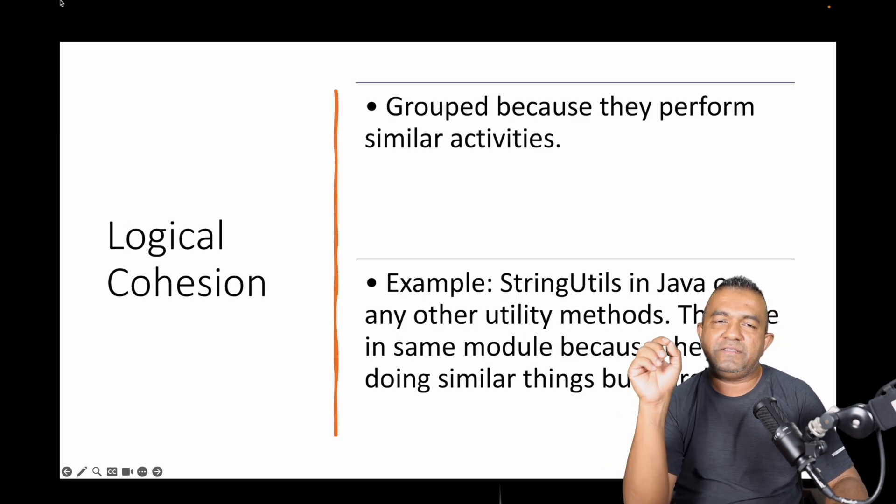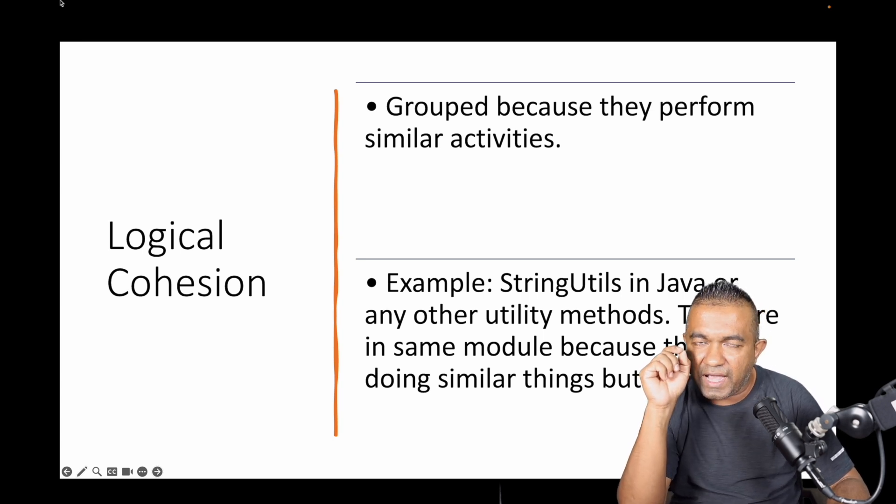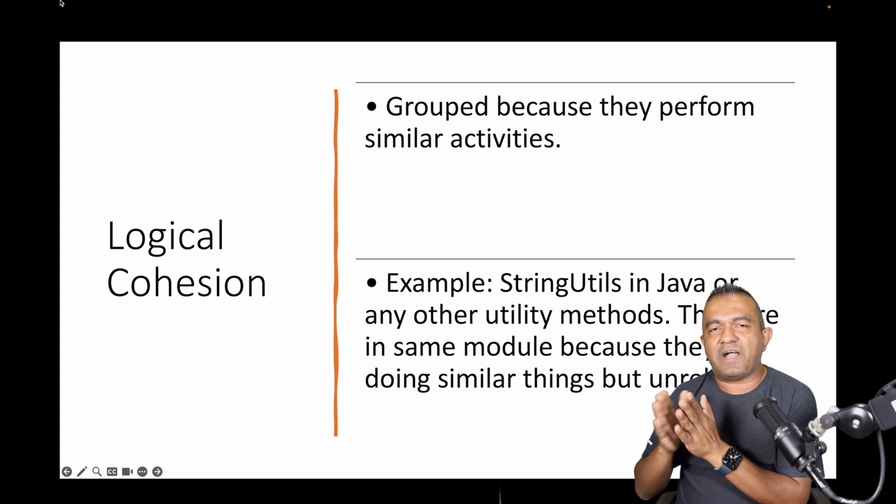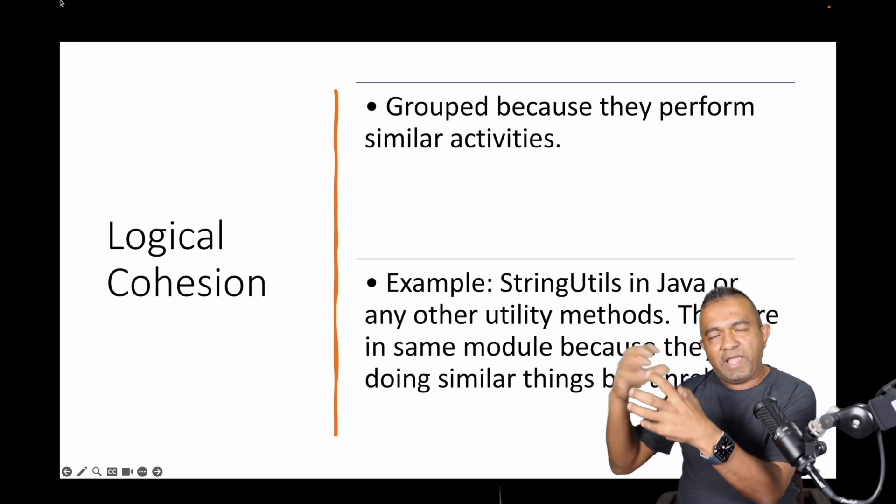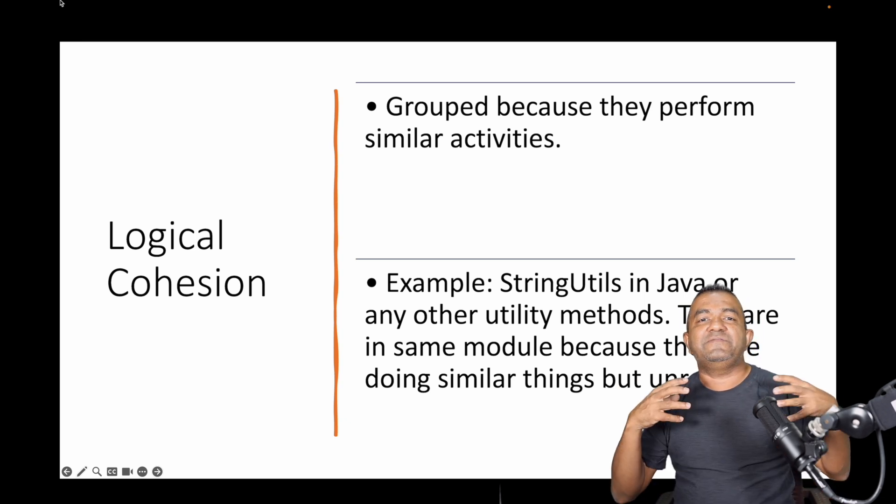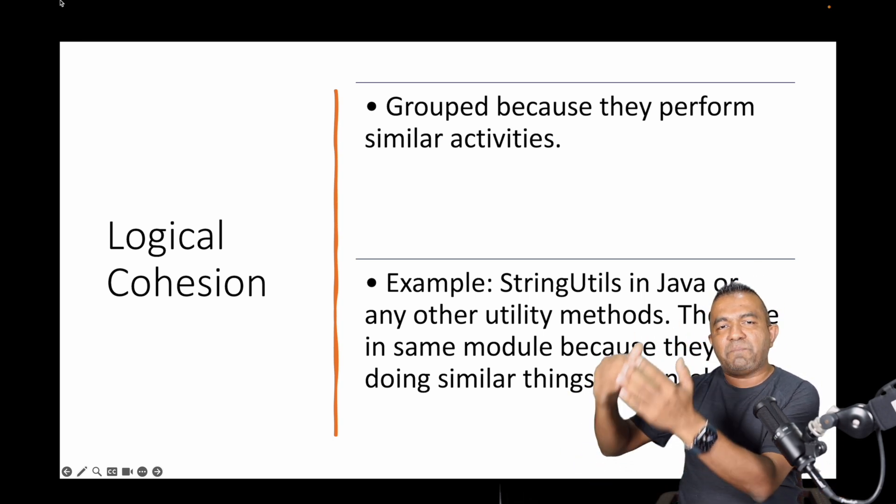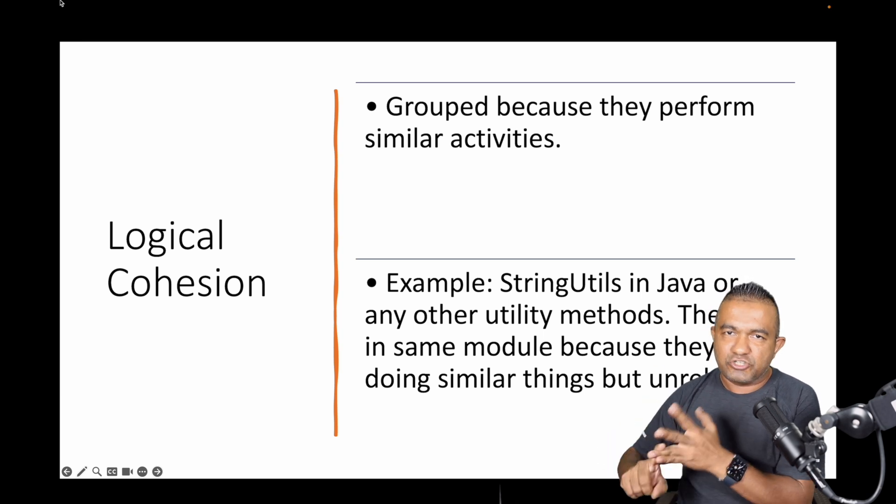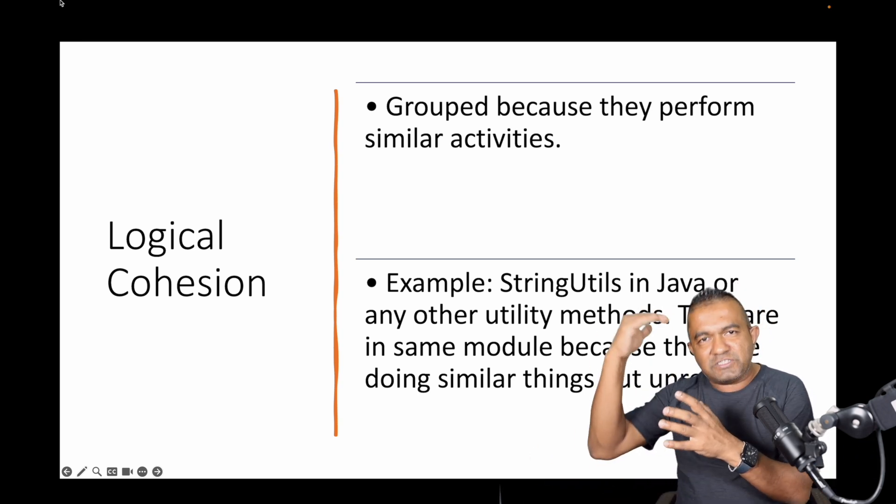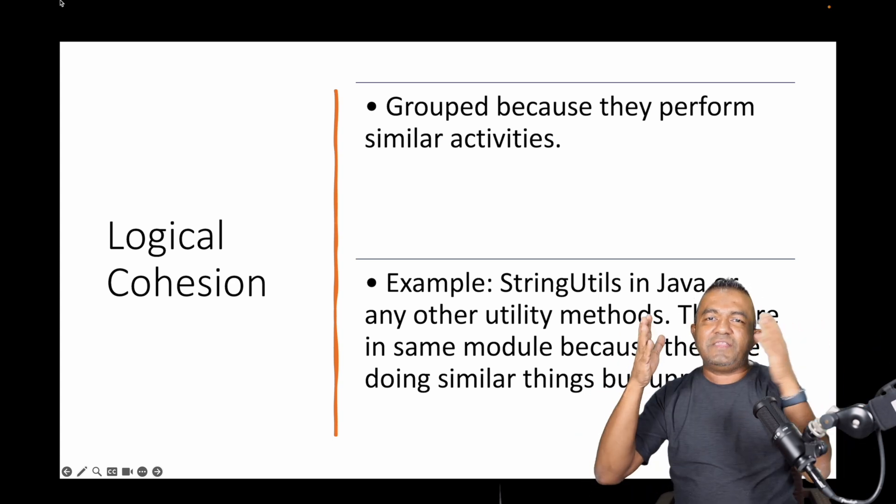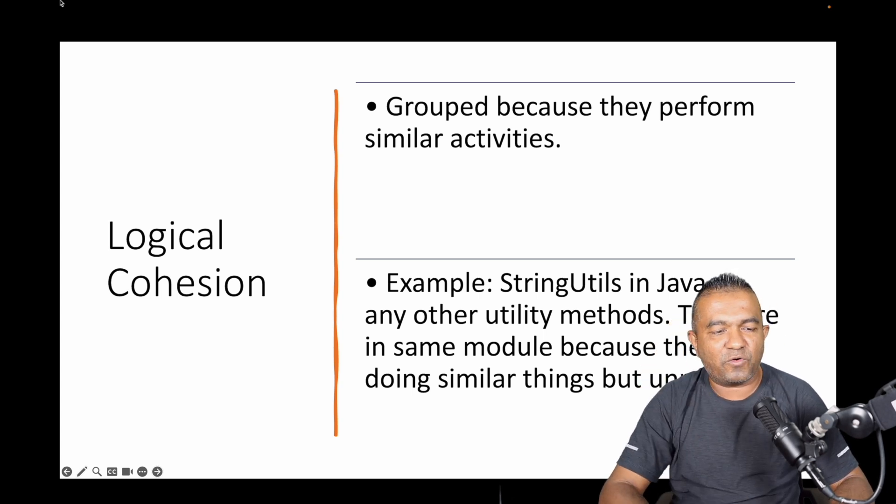Next one is logical cohesion. Logical cohesion is something grouped by the task they're performing. Best example is a Java String util module. There are a bunch of methods packed into the same util module. They don't have a relationship with each other, but they're doing activity on a string. That's the only reason they stay together. You may have util modules in your project with a bunch of methods - some maybe sorting, searching, reading files, writing files, formatting files - doing a bunch of things which are not related to each other but all are in the util module because those are utils. That's logical cohesion.